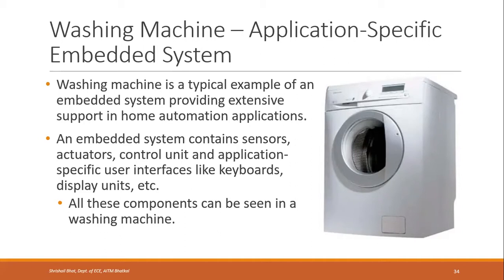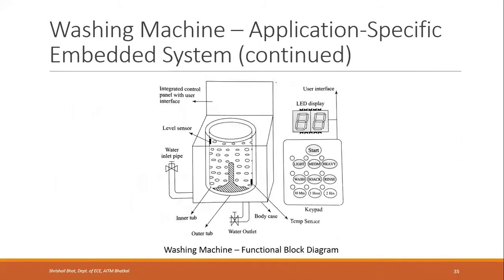As we have seen, embedded systems contain different components — sensors, actuators, control unit, and application-specific user interfaces like keyboards and display units. In a washing machine, all these components are present: sensors, actuators, control units, and interfacing units. This gives us the functional block diagram of a washing machine.